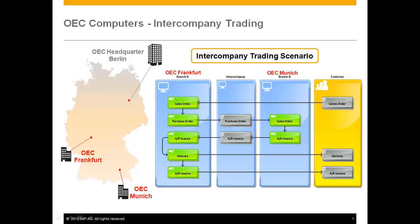OEC Computers have a number of affiliated branches across Germany with headquarters in Berlin. Jason Butler from the OEC Frankfurt branch receives a sales order from his customer PC Trade Inc. However, there is not enough stock to fulfil the order on hand. Jason is able to review a global stock report and sees that the OEC branch in Munich has enough stock on hand, and in turn triggers an intercompany trade process to purchase the additional stock to fulfil the sales order.